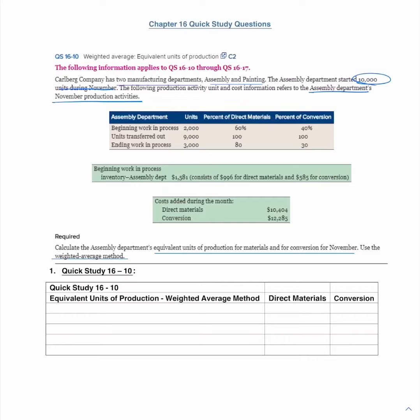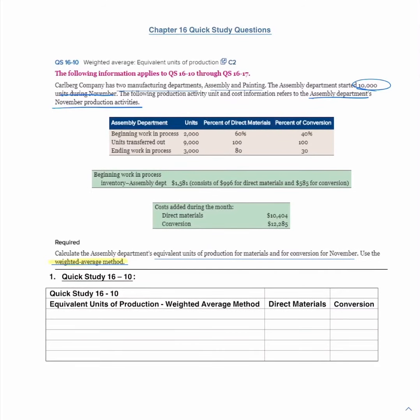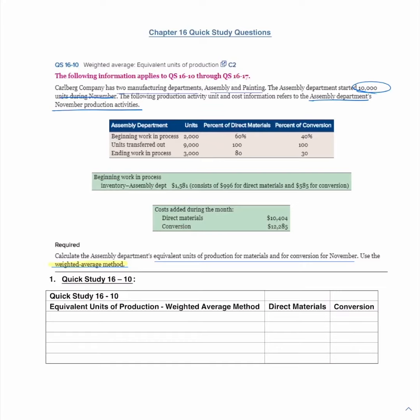In all the questions on the homework, it will use the weighted average method. Technically, the chapter covers two methods — FIFO and weighted average — but for this introductory course, we will simply use the weighted average method. If you're an accounting major moving on in the field, I recommend familiarizing yourself with the FIFO method basics before an advanced cost accounting course.